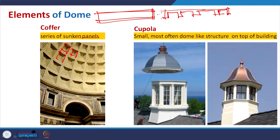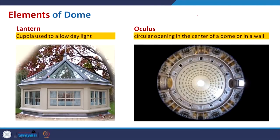A cupola is basically what we can relate to a cup — the shape if you just place a cup in this position. It is the small, most often dome-like structure on top of a building. In many buildings with a similar roof pattern you can place this on top. The lantern cupola is used to allow daylight — in this case the cupola has transparent glass so daylight can easily enter and at night you can also get a good ambience and view of the building.